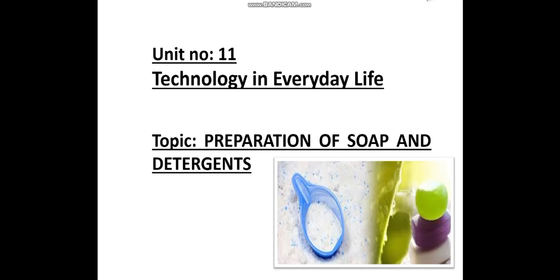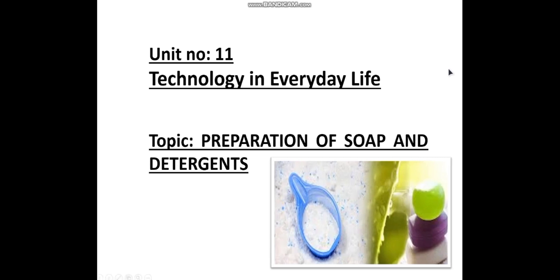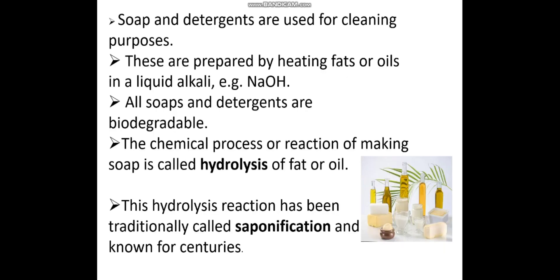In the house we can create soap and detergent. Detergent is used for clothes and other things. Soap and detergent are used for cleaning purposes. These are prepared by heating fats or oils in a liquid alkaline solution.